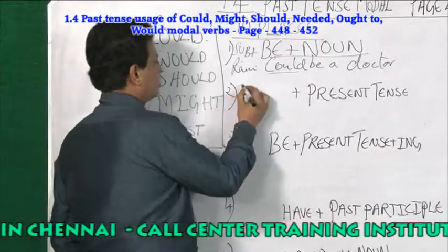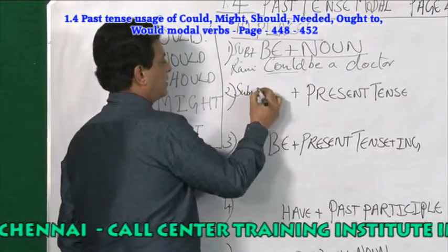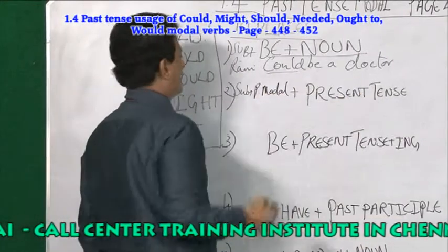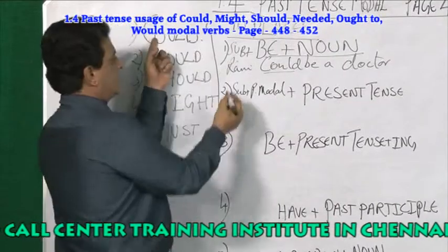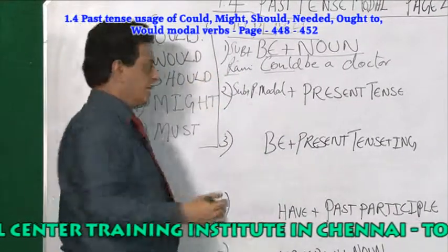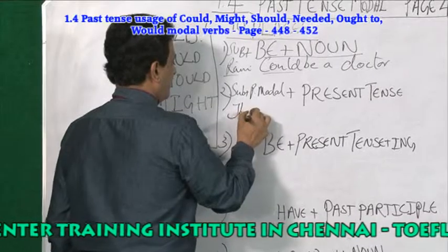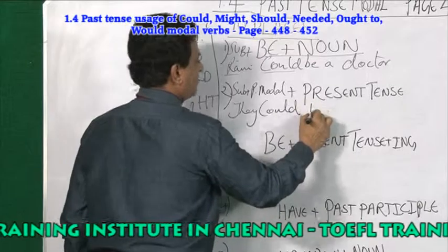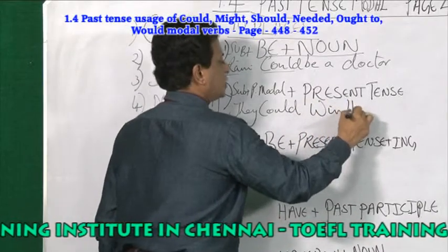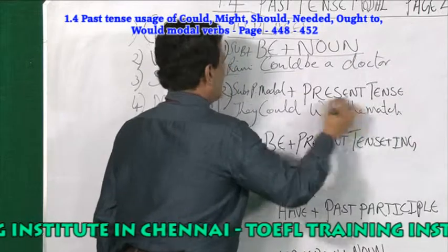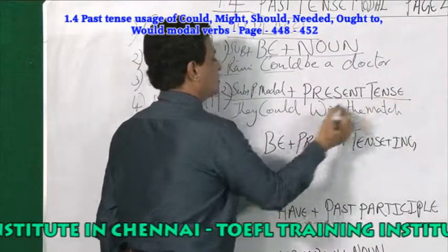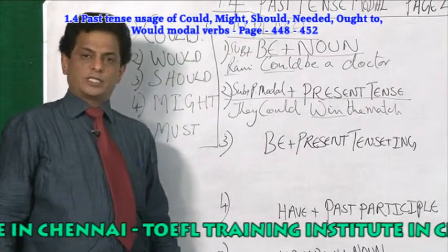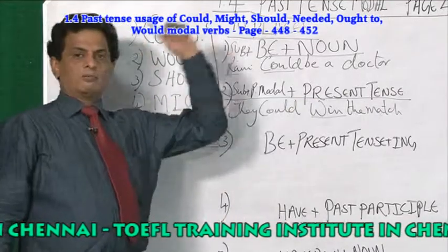Second place: it is used with subject plus past tense modal verb plus present tense verb. For example, using 'they' as the subject: they could win the match. So the second place is where could, should, would is used directly with a present tense verb — that is, modal verb plus present tense verb.